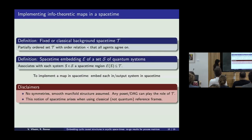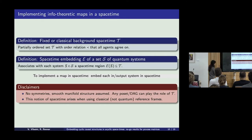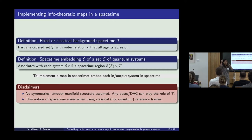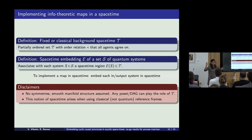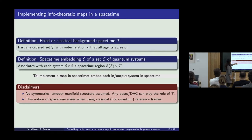Now let's talk about spacetime. We want to look at how we can implement certain maps in a background spacetime. For us, a background spacetime will just be a partially ordered set. Importantly, because it's a fixed or classical background spacetime, we insist that all agents in the protocol should agree on this partial order — agents agree on the identity of these points and on the partial order relation between them. This is like a classical special relativistic view where we might not agree on our coordinates but we agree on the light cone structure. This definition is quite minimal — it doesn't assume any symmetries or smooth manifold structure, and any partially ordered set or DAG can play the role of the spacetime.